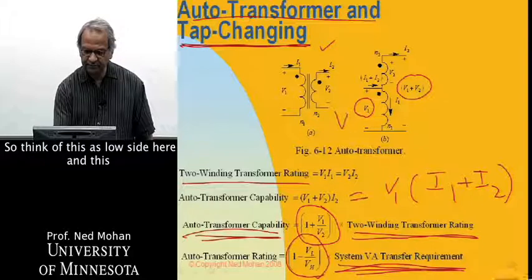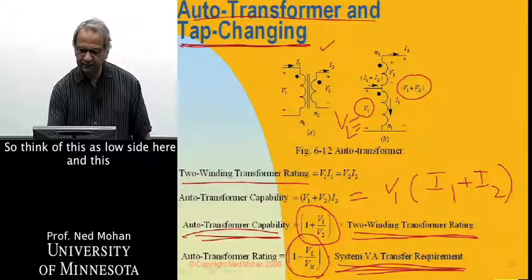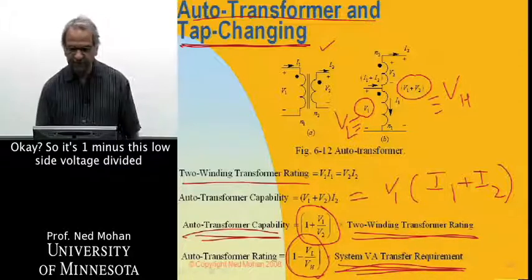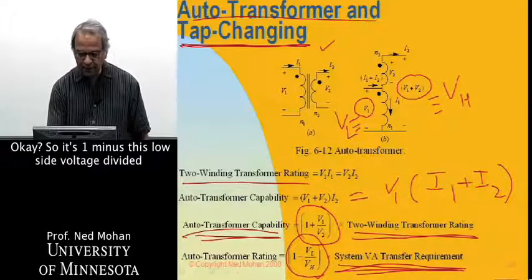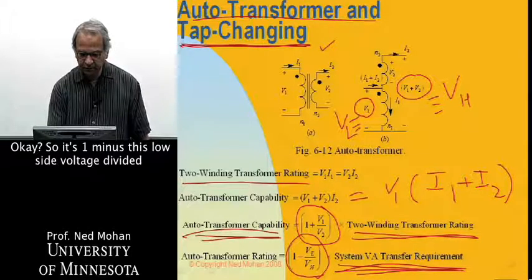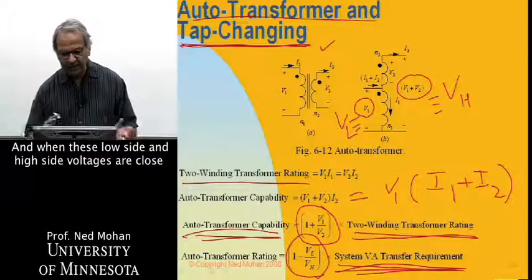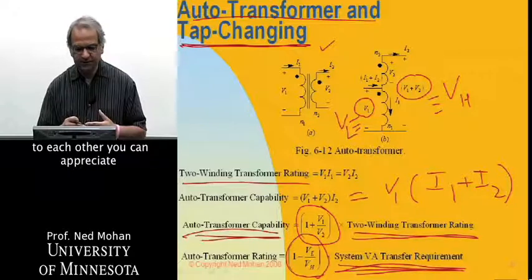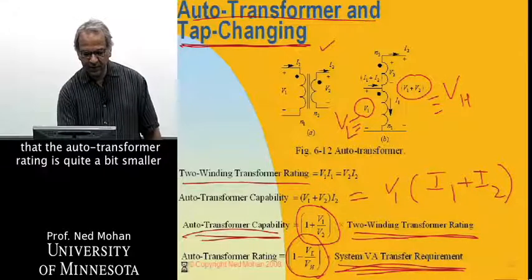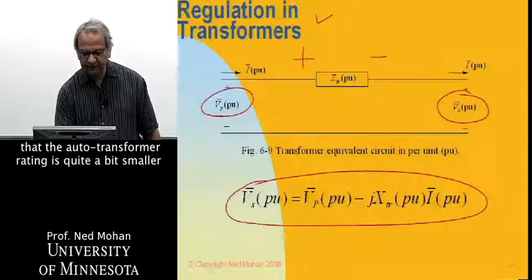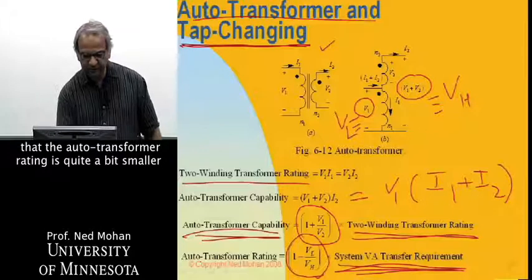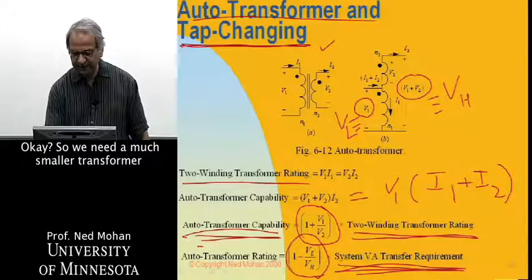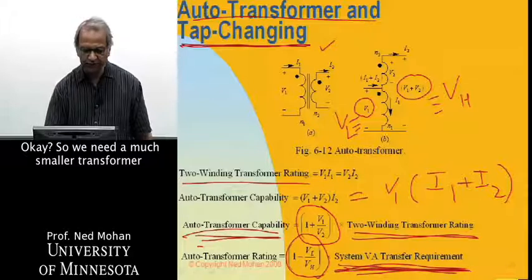So think of this as low side here, and this as the high side over here. So it's one minus this low side voltage divided by the high side voltage. And when these low side and high side voltages are close to each other, you can appreciate that the autotransformer rating is quite a bit smaller than the system VA transfer requirement.